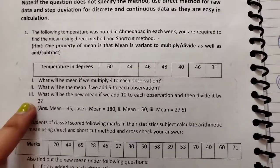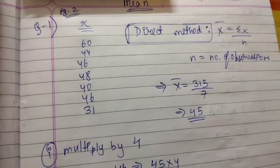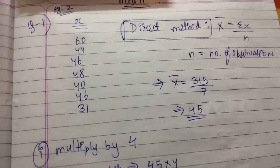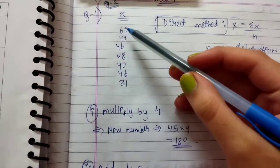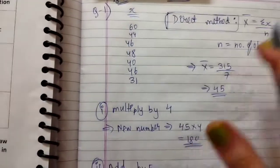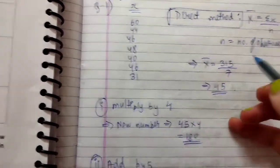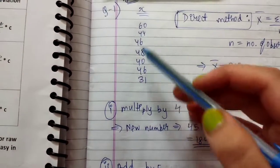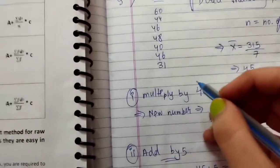The first sub-question asks: what will the mean be if we multiply 4 to each observation? I am solving it by the direct method. Since it is raw data, the formula is Sigma X upon n. We have 7 observations (n = 7), and the total comes to 315. Applying the formula: 315 divided by 7 gives us a mean of 45.